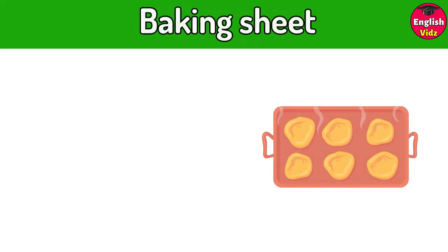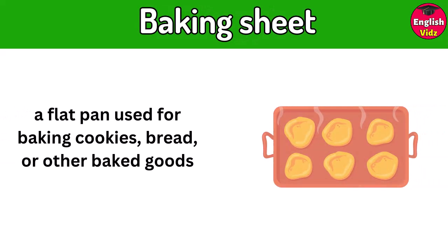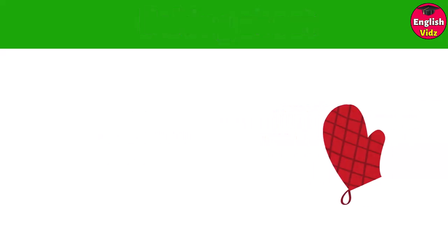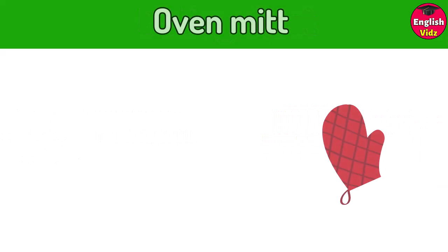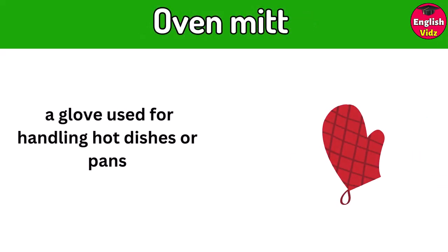Baking sheet. A flat pan used for baking cookies, bread, or other baked goods. Oven mitt. A glove used for handling hot dishes or pans.